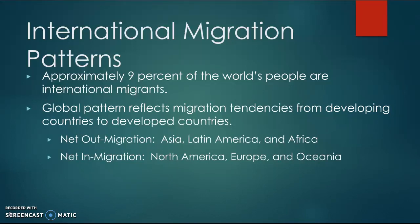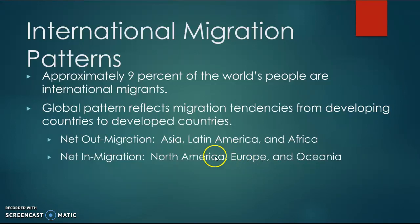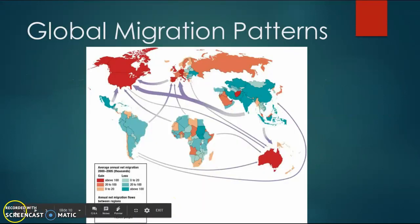Looking at international migration patterns — on a test I might expect you to know examples of net out-migration countries: Asia, Latin America, and Africa. People are leaving those areas in larger numbers to go to countries like North America and Europe for economic prosperity. You won't see many people from those in-migration countries moving to the out-migration ones, but you might see movement amongst in-migration countries.